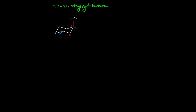If we place the CH₃ group on an axial on carbon one for a cis conformation, it also has to be on axial on carbon three. So cis here is axial-axial. Or in the flipped chair conformation, the axial becomes equatorial and the equatorial becomes axial, giving both CH₃ groups on equatorial bonds.